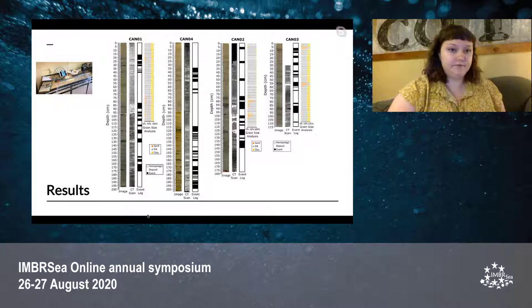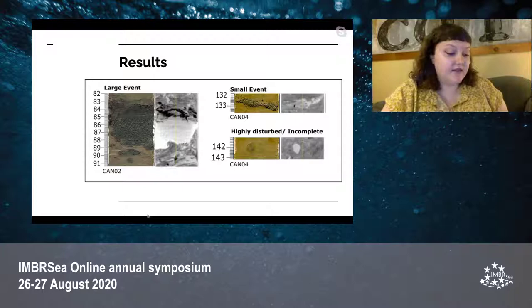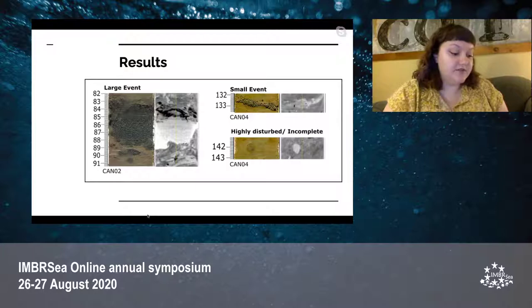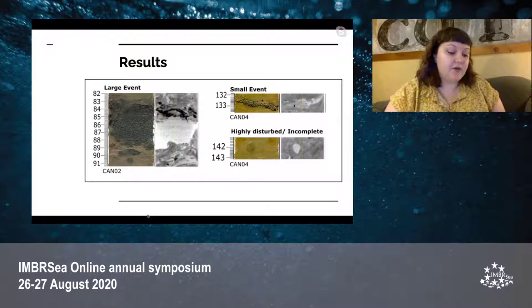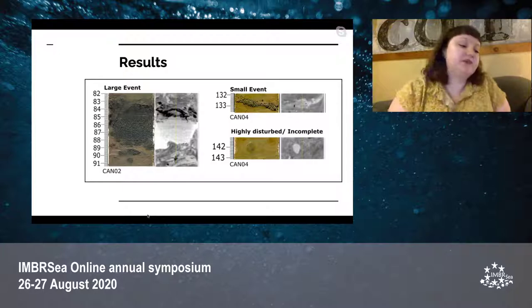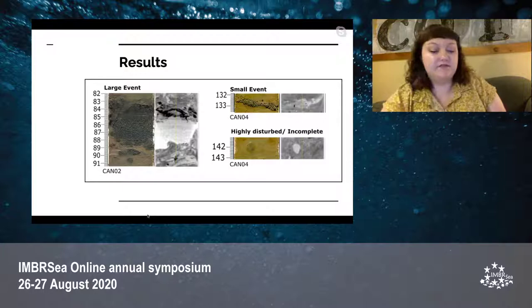The events recorded are in the event log. The cores were then categorized into hemipelagic background sedimentation and three different types of events. Large events are greater than 3 centimeters thick and composed of thick layers or stacks of multiple layers extending the whole width of the core but with less than 1 centimeter of hemipelagic sediment separating them. Small events are less than 3 centimeters thick and composed of at least one complete layer extending the whole width of the core. Highly disturbed or incomplete events are those so reworked or disturbed that they no longer have a clear start or end, and also includes small lenses and patches not associated with small or large events.